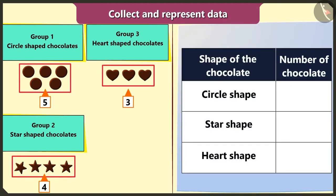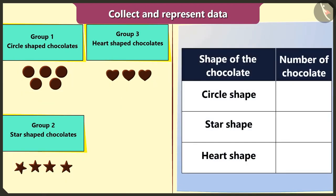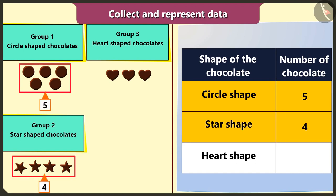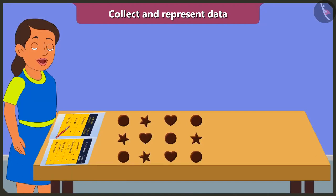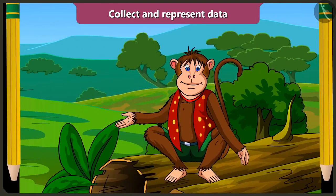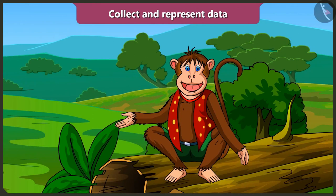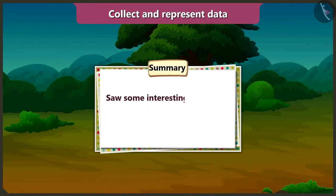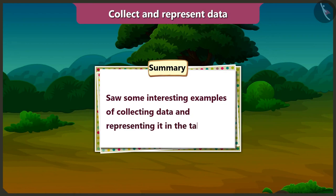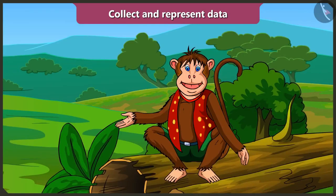Now I will represent all this data by making a table. The number of circle shaped chocolates is five, the number of star shaped chocolates is four, and the number of heart shaped chocolates is three. Wow! By collecting data like this, I can remember so much information easily. Children, today in this video we saw some interesting examples of collecting data and representing it in a table. In the next video, we will see some more interesting examples.